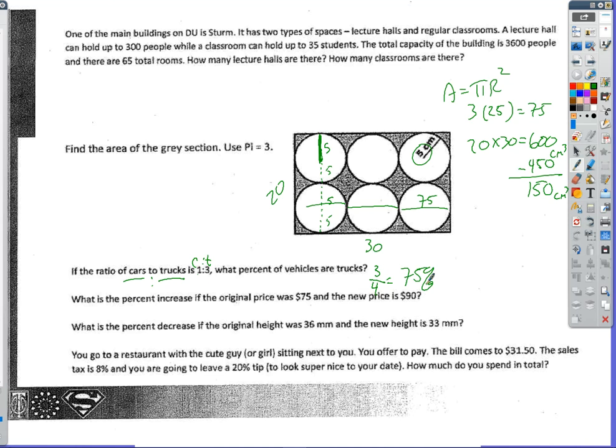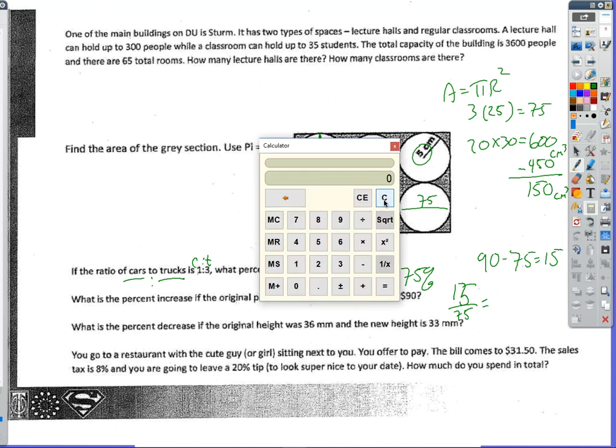What is the percent increase if the original price was $75 and the new price is $90? Well, the difference in the two is $15. So we've increased the price by $15. So what we really want to do is we want to find what percent 15 is of the 75. So we're finding out the percent that 15 represents of 75, and so we are just going to divide 15 by 75, and that is a 20% increase.